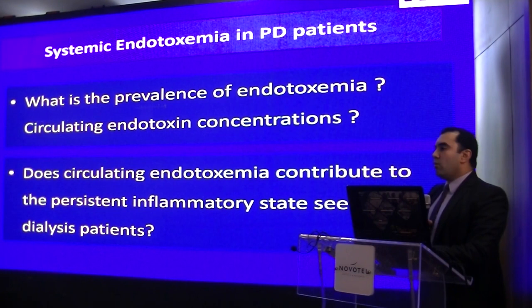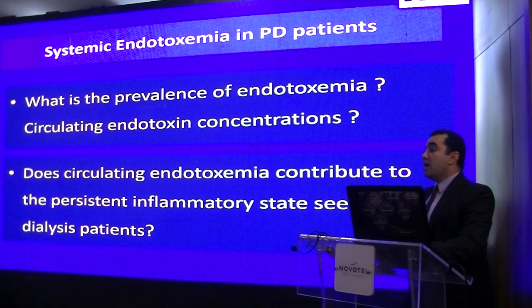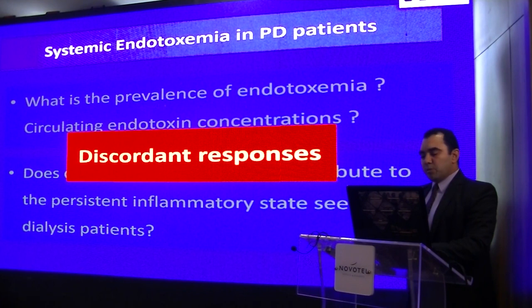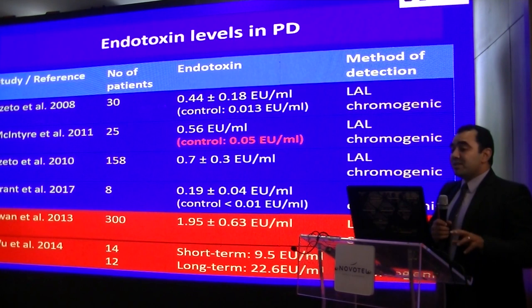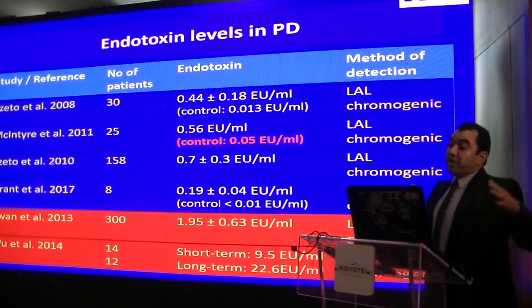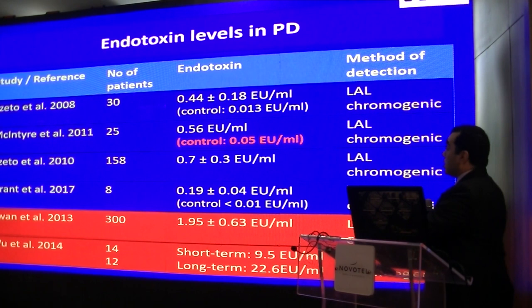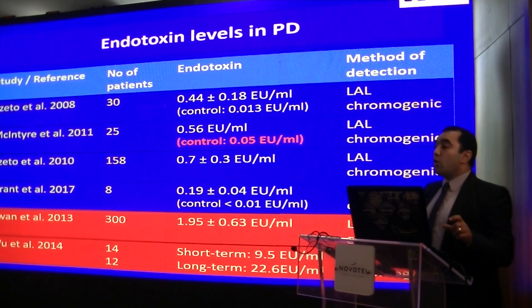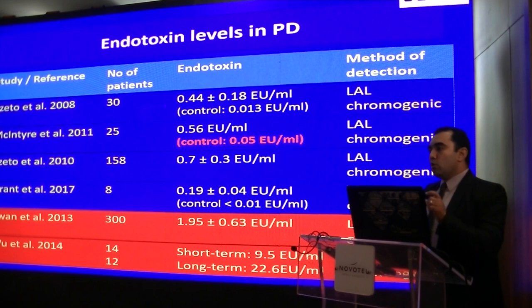There are two questions that arise: What are the levels of circulating endotoxins in peritoneal dialysis patients? And do these circulating levels of endotoxin have implications in terms of inducing an inflammatory response? In the literature, we get discordant responses. Looking at different studies addressing endotoxin levels in PD patients, there is a huge variation reported — from as low as 0.19 to as high as 22.6 in one study. I'd like to focus on one study where PD patients had endotoxin levels of 0.56, while controls had a level of 0.05.